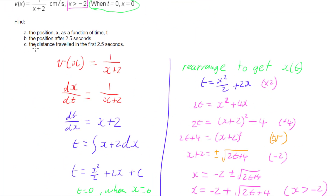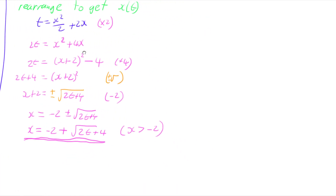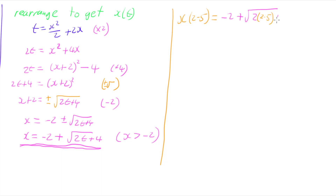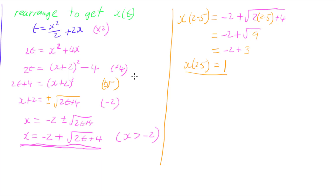Now we can answer the other two parts. Part B — the position after 2.5 seconds. We find x(2.5) equals negative 2 plus the square root of 2 times 2.5 plus 4. That's negative 2 plus the square root of 5 plus 4, which is the square root of 9, which is 3. So x(2.5) equals negative 2 plus 3, which equals 1. So our position after 2.5 seconds is 1.